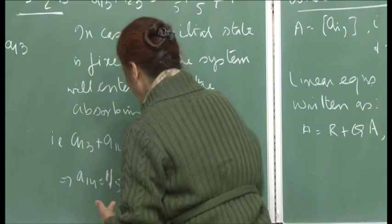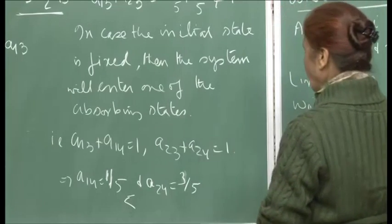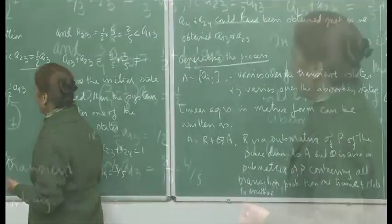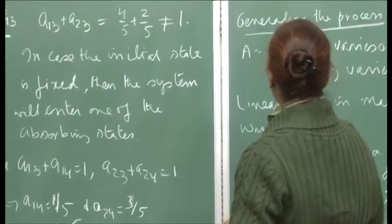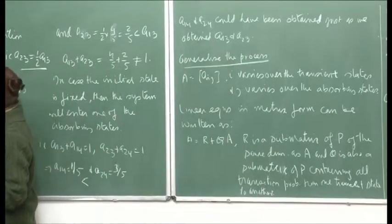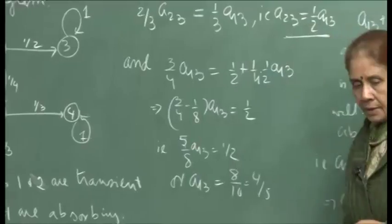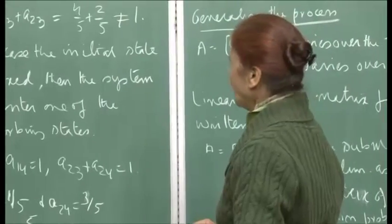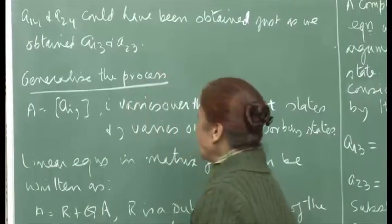A_14 and A_24 could also have been obtained just as I wrote the equations for A_13 and A_23 — the same way I would write down the equations for A_14 and A_24 and compute them. This is the method for computing the absorbing probabilities, and as we have seen, these probabilities depend on where the system is, unlike the steady state probabilities which are independent of the starting state. Now let us generalize this process.